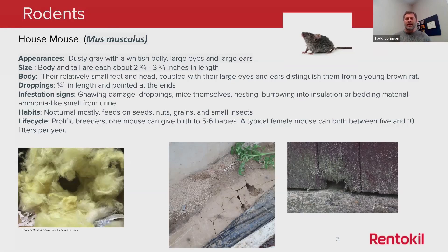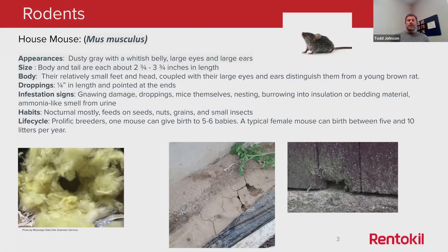Mice can be running around the confinement area or in your agriculture buildings, whether it's grain storage or anything like that. So how do you know you've got a mouse infestation? Let's talk about the infestation signs. Typically you're going to see droppings — about a quarter inch in length, pointed at the ends. You can find those along the walls, on the ground, or around the feed.